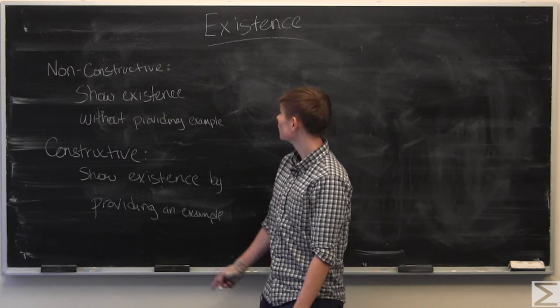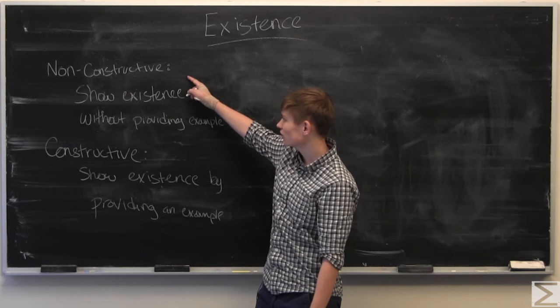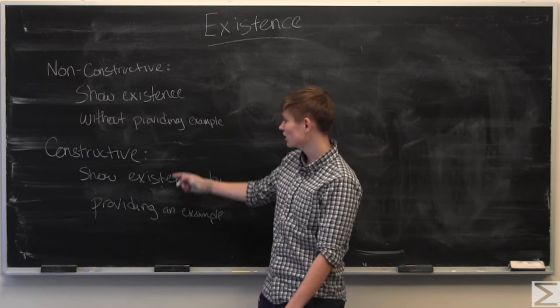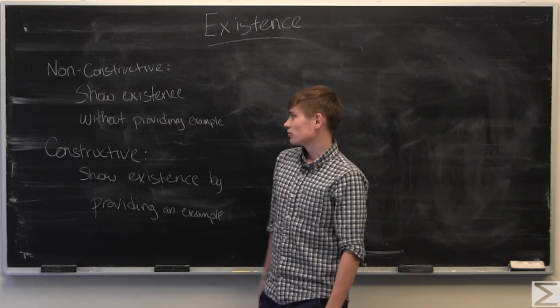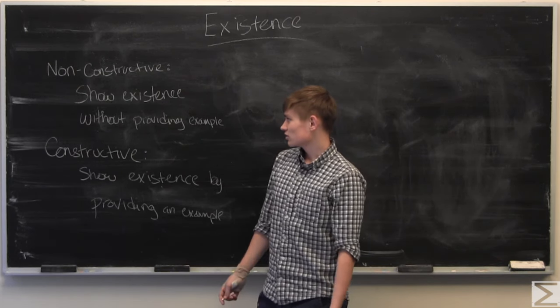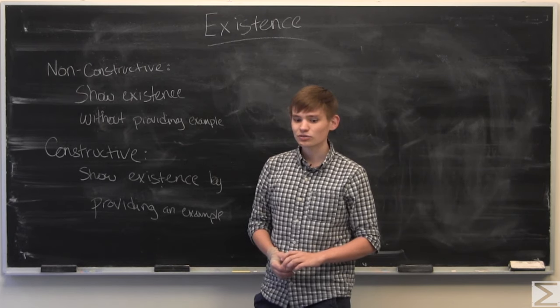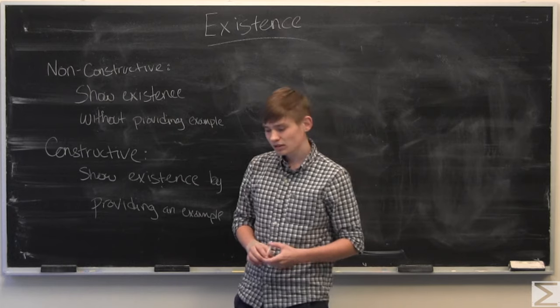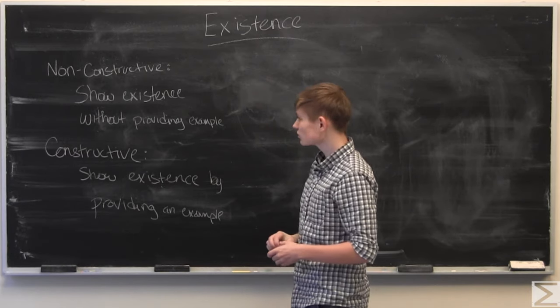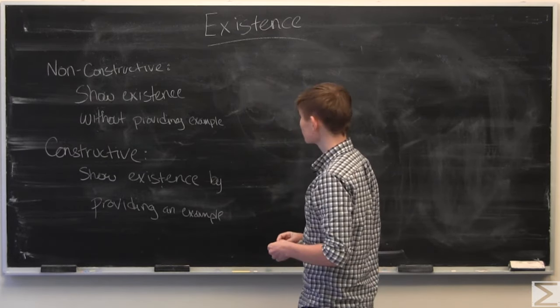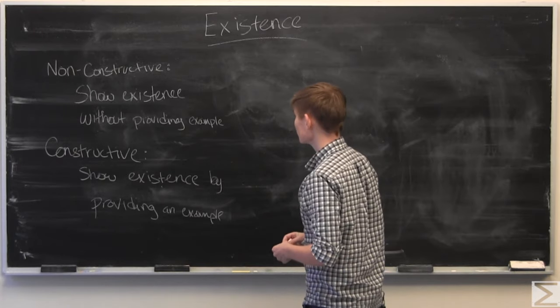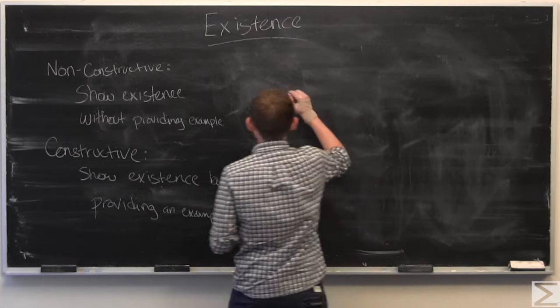The two types are non-constructive proofs and constructive proofs. Non-constructive proofs show existence but they don't provide a solution or an example, which sounds confusing, but I'll go over a quick example to show what a non-constructive proof is.